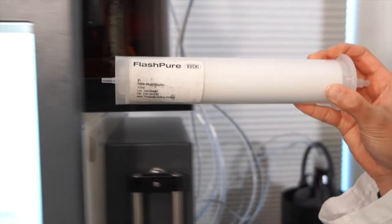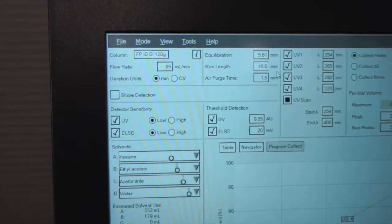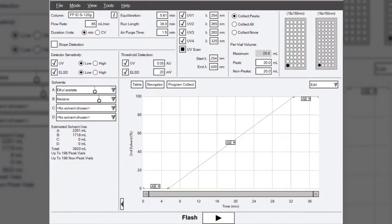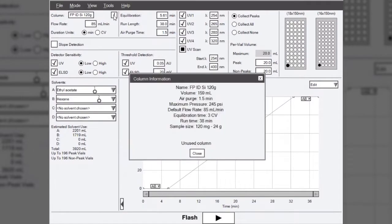There is also an RFID reader on the top of the instrument behind the right side of the display for scanning tagged cartridges. Once the cartridge is scanned, the system updates with the stationary phase, size, and flow rate, and will show the loading range of sample as well as if the cartridge has been used previously.